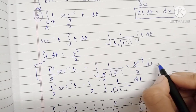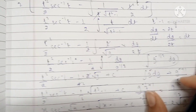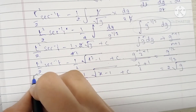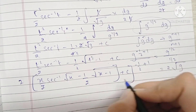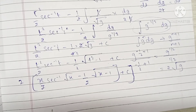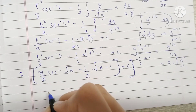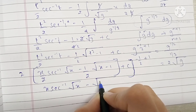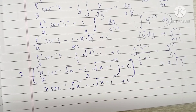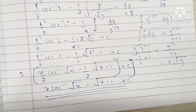We also have to remember that we had taken a factor of 2 outside earlier, so we multiply the whole expression by 2. The plus C stays as a constant regardless of multiplication, so the final answer becomes x·sec⁻¹(√x) minus √(x−1) plus C.